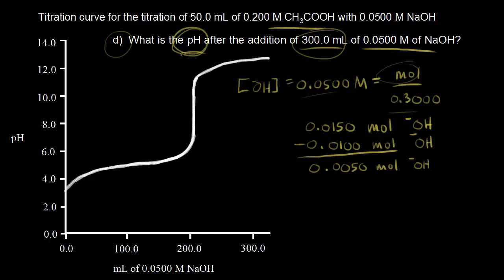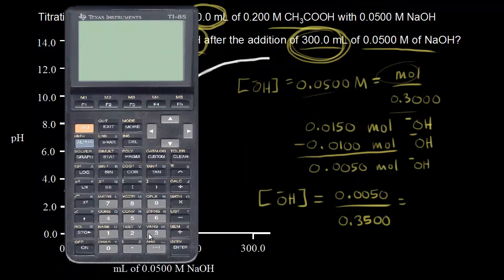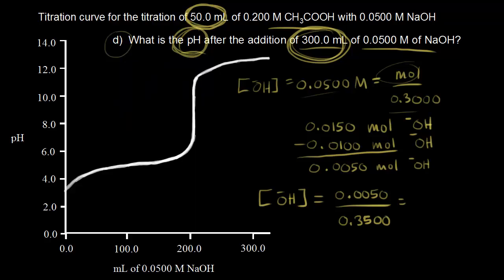To find the pH, we find the concentration of hydroxide ions remaining after neutralization. Concentration is moles over liters: 0.005 moles divided by the total volume. We started with 50 milliliters and added 300 milliliters, giving 350 milliliters or 0.35 liters. The concentration of hydroxide ions is 0.005 divided by 0.35, which equals 0.014 molar.